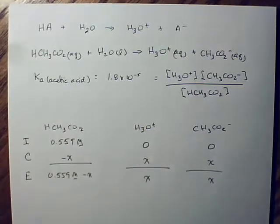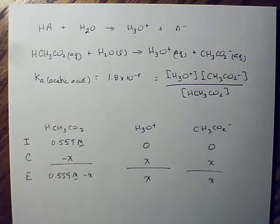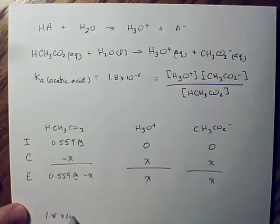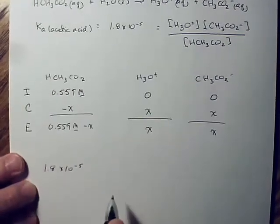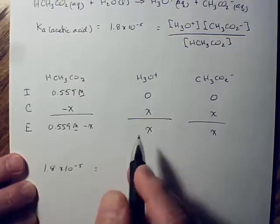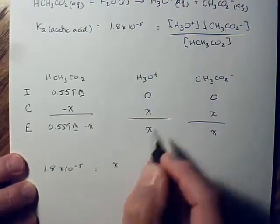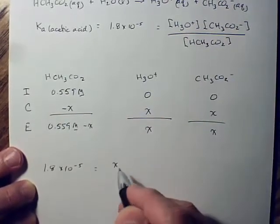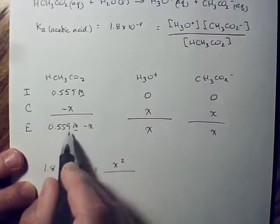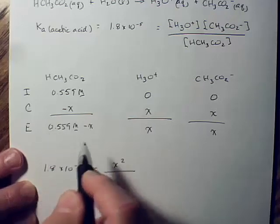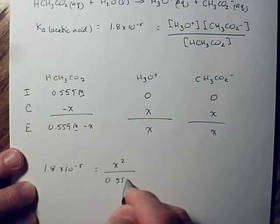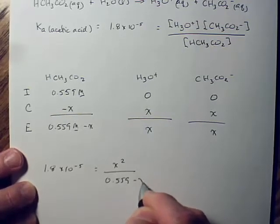Now, we have things we can plug into that equation. Just plug them in. That's all you got to do. We got 1.8 times 10 to the negative fifth is equal to hydronium ion concentration is x. Acetate ion concentration is also x. Well, I could just say x squared. The acid concentration is this amount right here, 0.559 minus x.